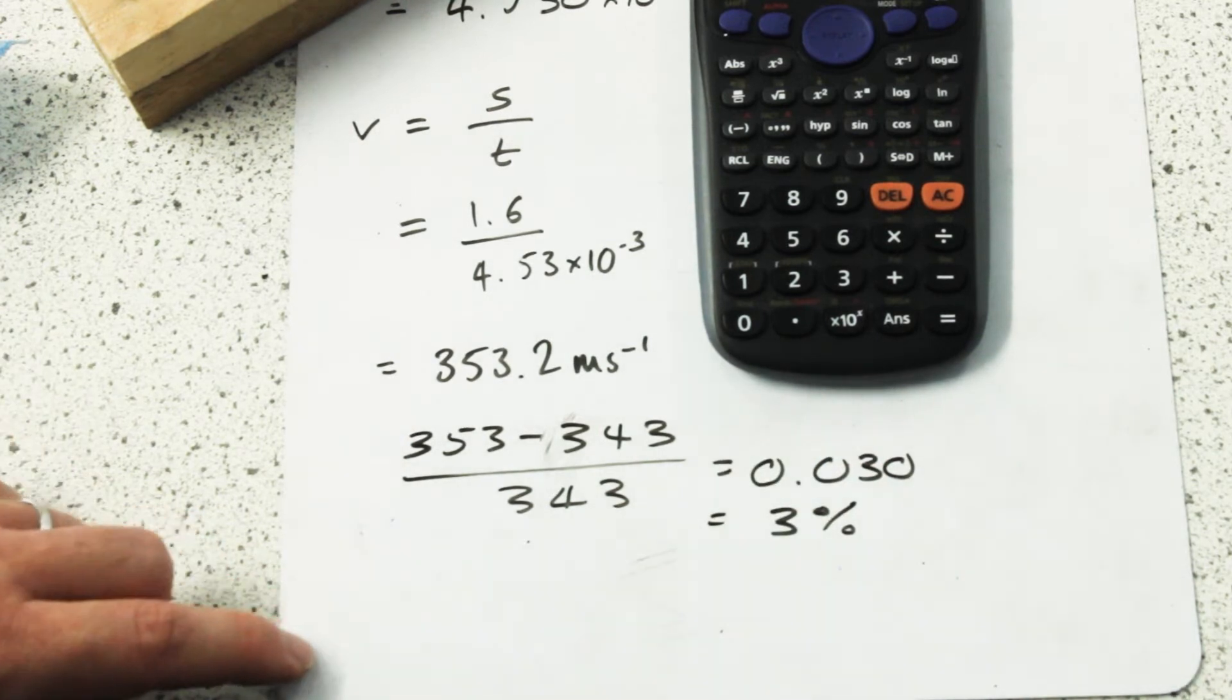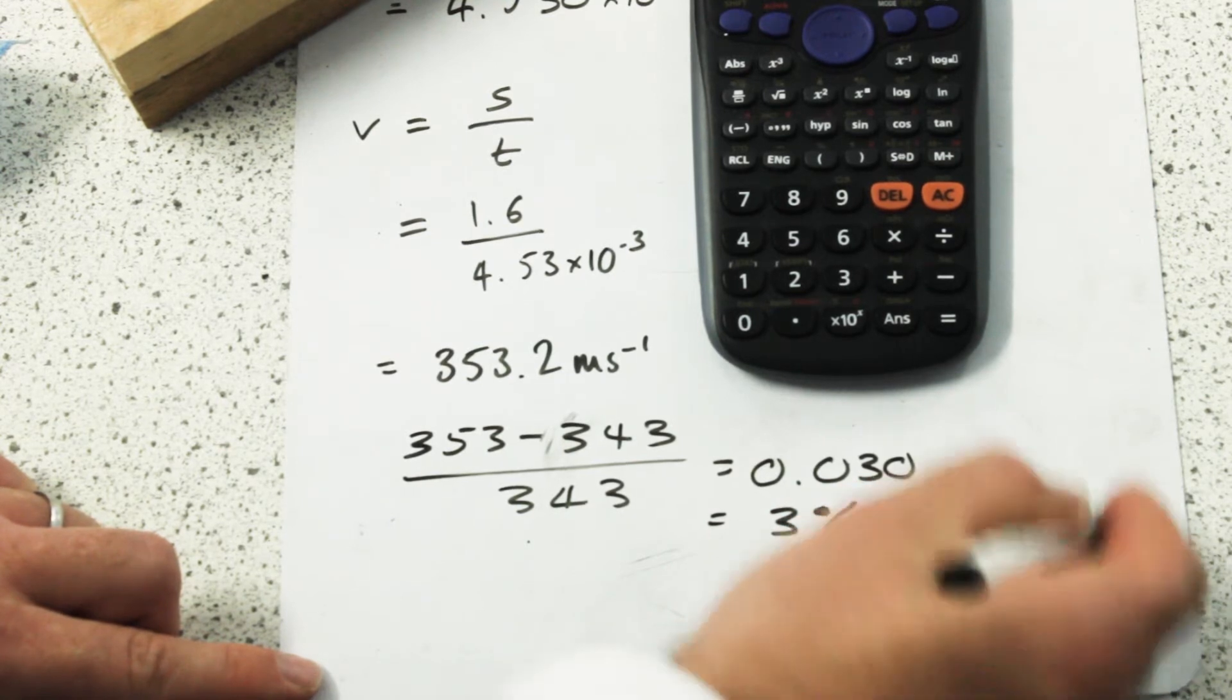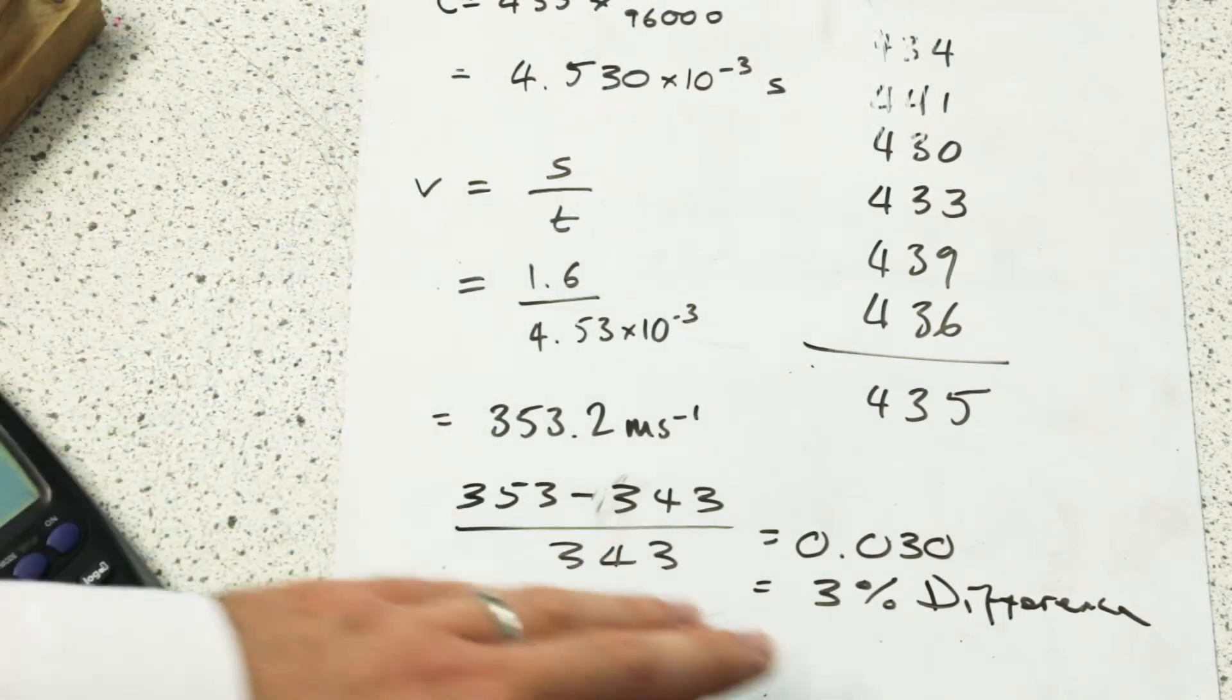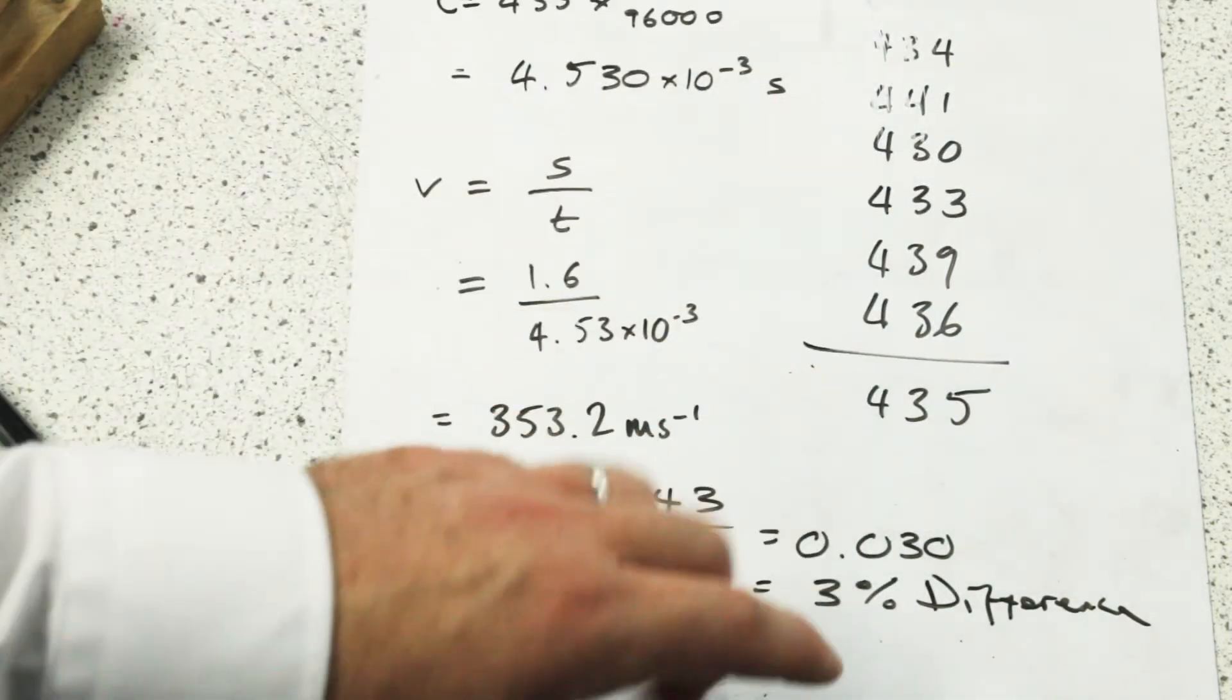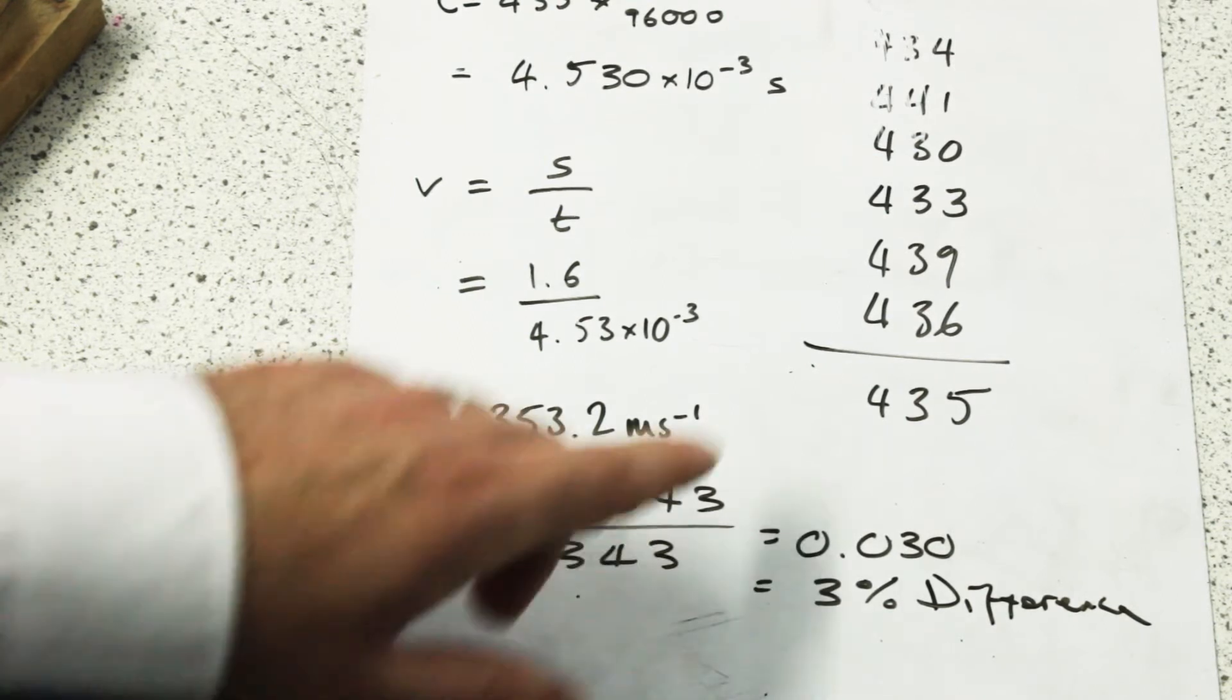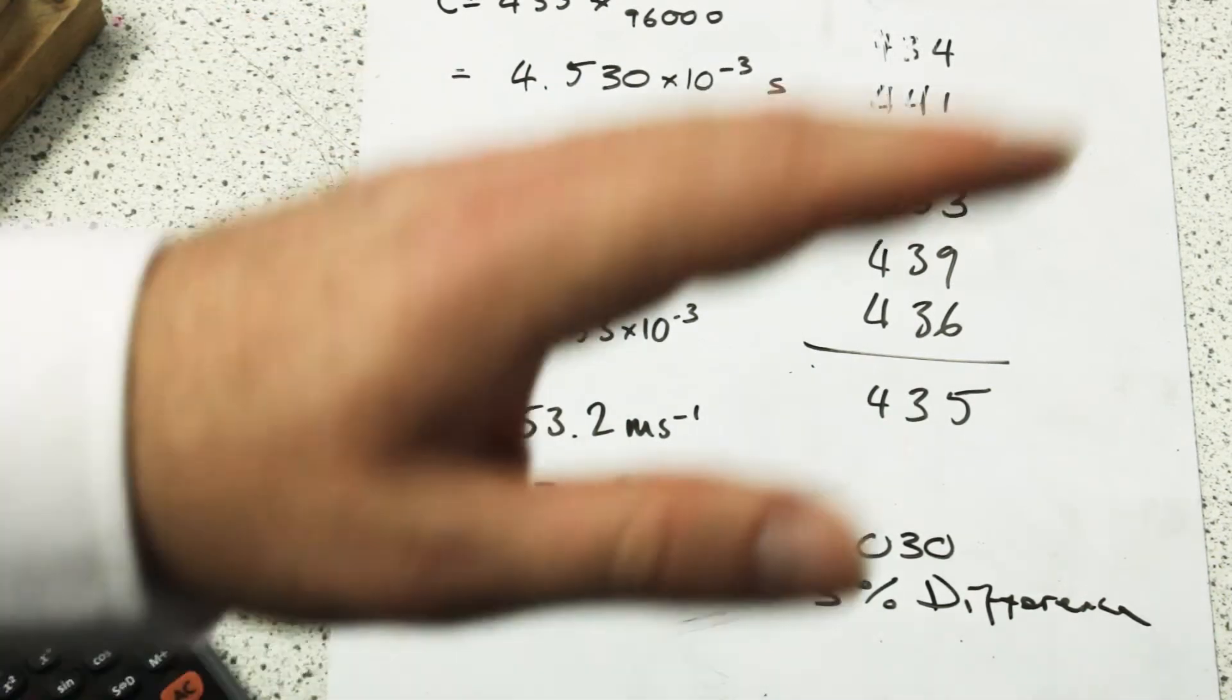So essentially 3.0 percent different—not terrible but not perfect, which for school lab conditions is not really a bad percentage difference. I'm happy with that as being my repeatable measurement. The fact that it's always been below the actual measurement tells me there's probably something else that I can do. Potentially my measurement of the length wasn't as accurate as it could have been and that skewed my results somewhat.